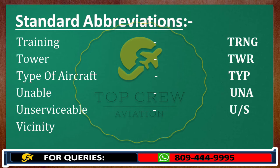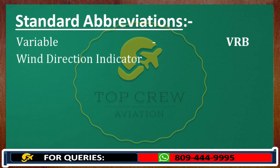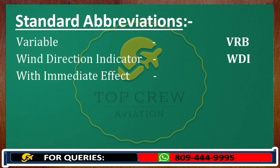Vicinity: VCY. Variable: VRB. Wind direction indicator: WDI. With immediate effect: WIF.